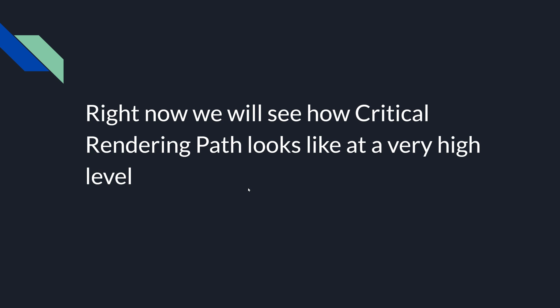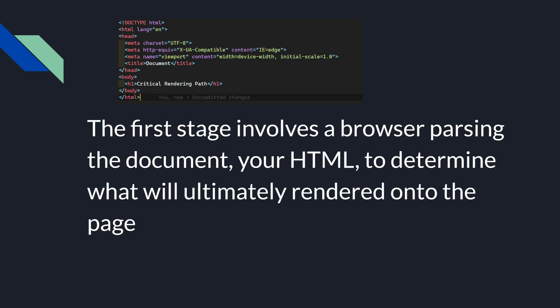Right now we will see how the critical rendering path looks at a very high level. The first stage involves the browser parsing the document. At the top you will be able to see the HTML document, and your HTML is used to determine what will ultimately render onto the page.